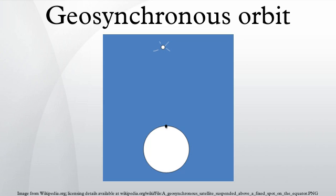A special case of geosynchronous orbit is the geostationary orbit, which is a circular geosynchronous orbit at zero inclination. A satellite in a geostationary orbit appears stationary, always at the same point in the sky, to ground observers. Popularly or loosely, the term geosynchronous may be used to mean geostationary. Specifically, geosynchronous Earth orbit may be a synonym for geosynchronous equatorial orbit, or geostationary Earth orbit.